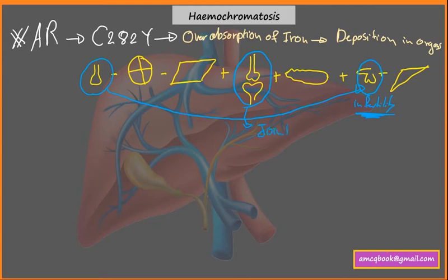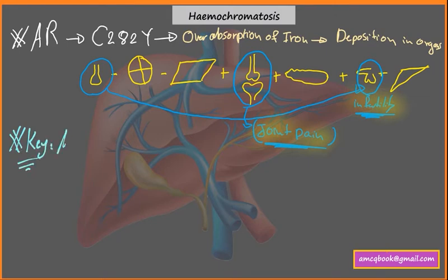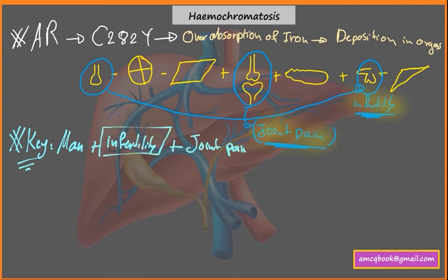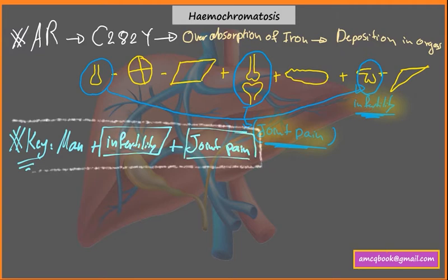The keyword for Hemochromatosis in the AMC exam is as follows: a man presenting with infertility and joint pain. Whenever you see a case describing a man with infertility and joint pain, this directly means Hemochromatosis for the AMC exam.